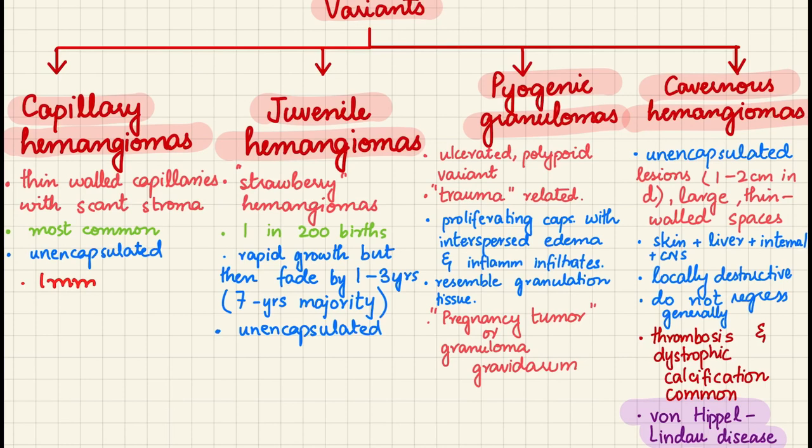An important point: cavernous hemangiomas in the cerebellum, brain stem, or eye area, when associated with similar lesions in the pancreas and liver, are characteristic of von Hippel-Lindau disease.